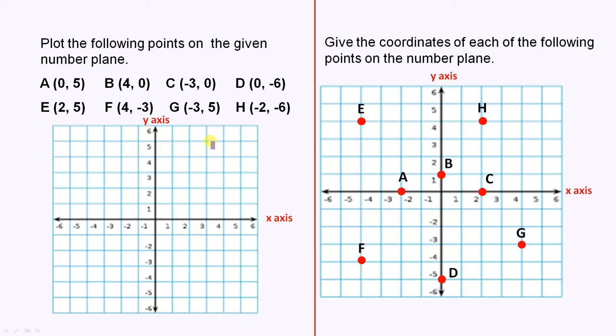So when you plot those eight points, you just do it one at a time. You look at the first number, then you move across whatever that number is on the x-axis, and then you move up or down on the y-axis. That's how you do each of those examples there.